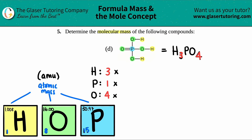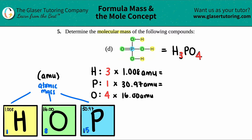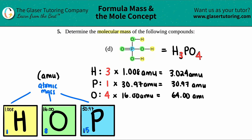1.008 AMU is the average mass of hydrogen, 16 AMU for oxygen, and 30.97 AMU for phosphorus. Since I have three hydrogens, I multiply by three; phosphorus remains the same since I only have one; and oxygen I multiply by four. So three times 1.008 for hydrogen is 3.024 AMU total; phosphorus is 30.97 AMU; and oxygen is 4 times 16, which is 64 AMU.